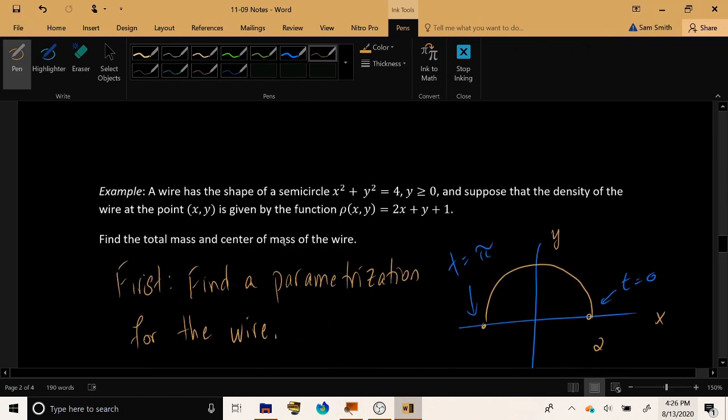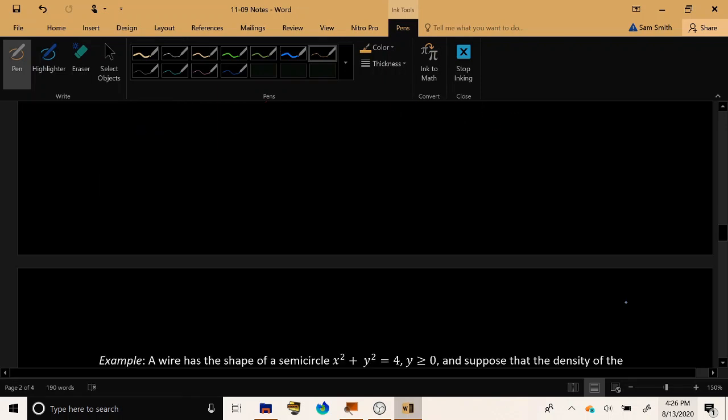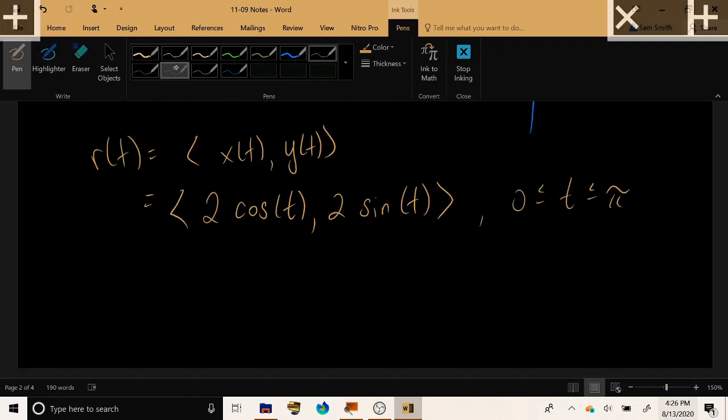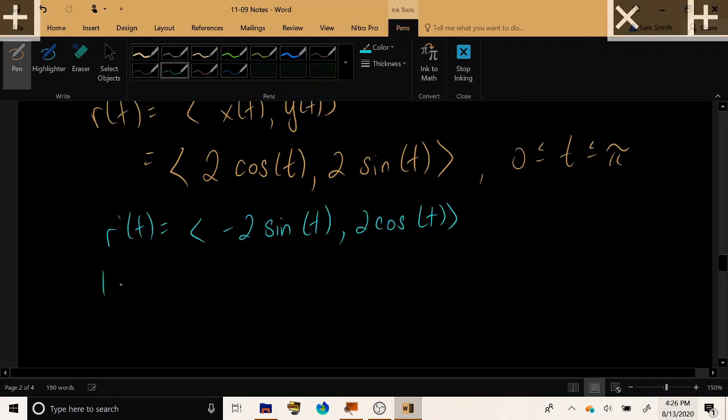So we've found a parametrization for the wire. So, the next thing that we need to work on is trying to get an expression for this integrand that we had in our formula, f of x of t, y of t times the speed of the parametrization. Okay, so let's calculate r prime of t, component-wise, we have negative 2 sine t and 2 cosine t. And if we calculate the speed of that, we have the square root of the x component squared plus the y component squared.